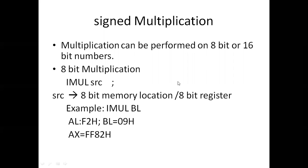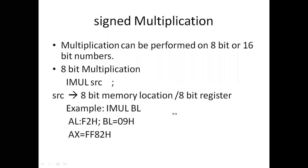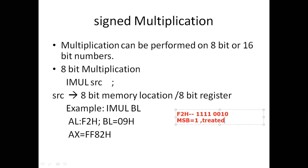Looking at F2h, if we write the binary equivalent of F2h: F is 1111 and 2 is 0010, giving 11110010. The MSB bit here is 1. If the MSB is 1, we must treat this number as a negative number which is in two's complement form.